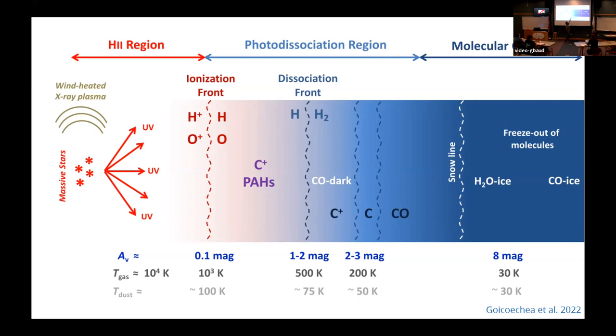At some point, the UV radiation drops to a level where hydrogen can start to combine into molecules, and then carbon will remain ionized, because you might have heard of this in famous CO-dark molecular gas regions.